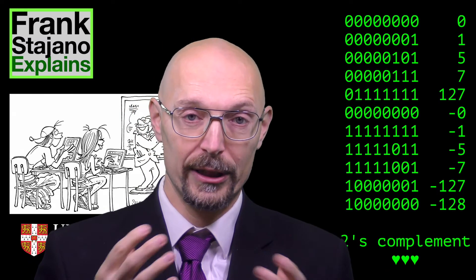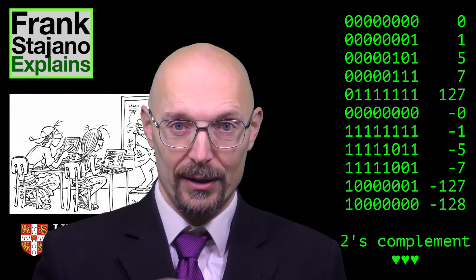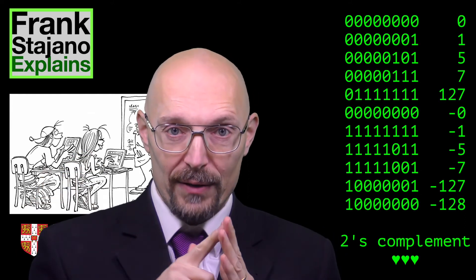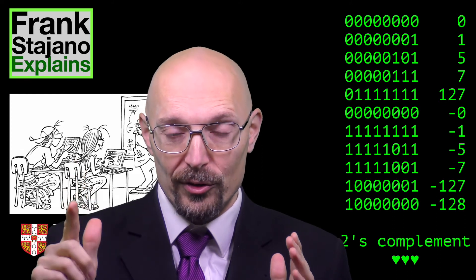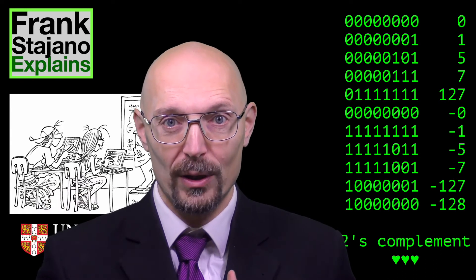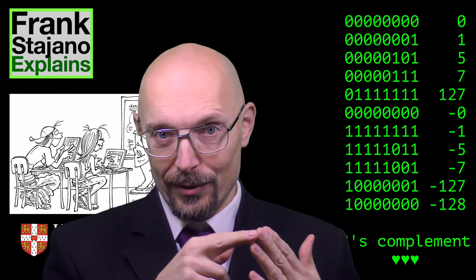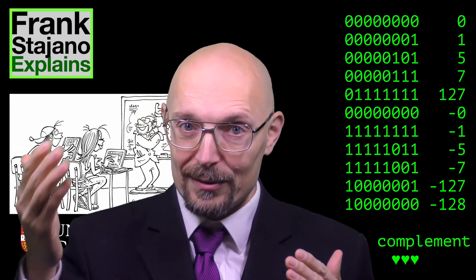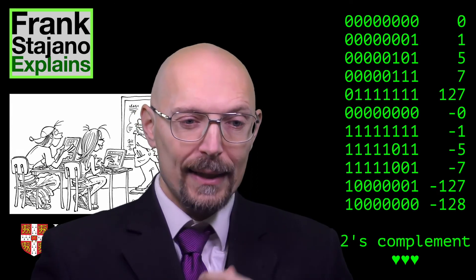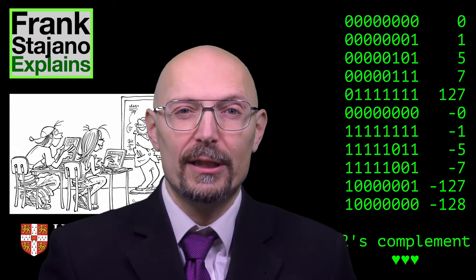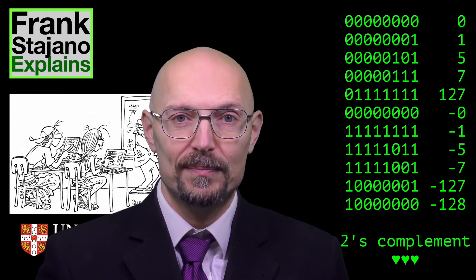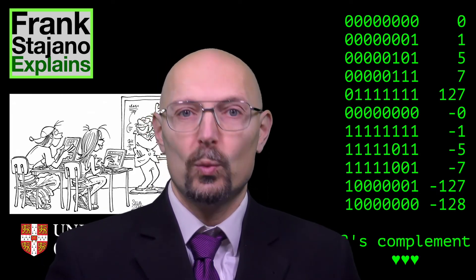2's complement works by having the most significant bit be worth its weight in negative. So if you have 8 bits, then bit number 7 — the topmost one — is not worth 2 to the 7; it's worth minus 2 to the 7, which is minus 128. All the other bits are worth regular positive powers of 2, but the leftmost one is worth minus 2 to the k minus 1.